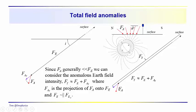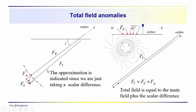Thinking about the relative sizes of F sub A, F sub T, and F sub B: F sub E is approximately equal to F sub EA — that should be F sub T, just a mix-up in the notation. So the total field intensity here includes the anomaly, and the anomalous field creates a total field intensity vector. We're assuming that these two are almost parallel, and that the component of the field we're concerned with is the projection of F sub A onto F sub E.